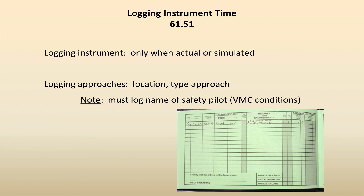You can also do it in a simulator or a flight training device. You do need to log the approaches — where you were, the airport location, the type of approach, whether it's an ILS, a VOR approach, or a GPS approach. If you're doing simulated IFR in the airplane wearing a hood with a safety pilot, you need to log the name of the safety pilot in your records. You also need to be in VMC conditions to do simulated IFR flight.